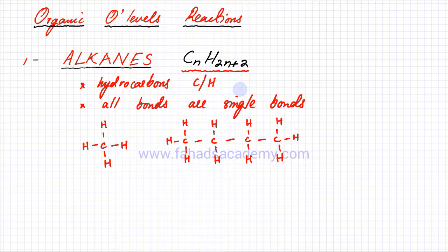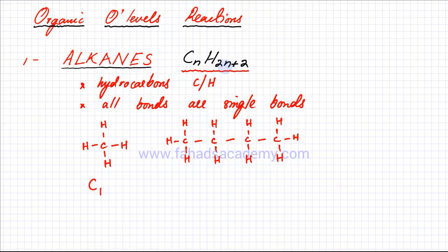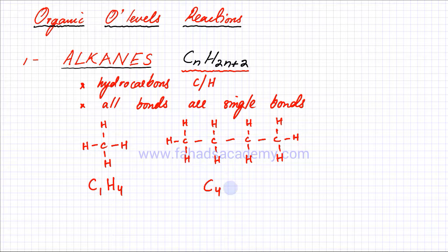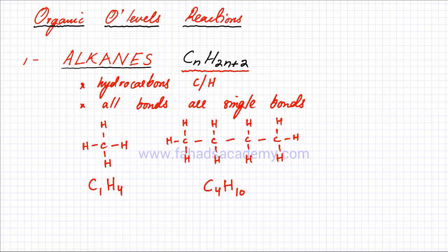We also discussed what the general formula means. The general formula is CnH2n+2, where N represents the total number of carbon atoms in the molecule. For methane, N would be one, so two times one plus two equals four — H would be four, giving CH4. For butane, N is equal to four, so hydrogens would be four times two plus two, which equals ten. You can count the hydrogen atoms in the drawn structure and confirm there are ten hydrogen atoms.